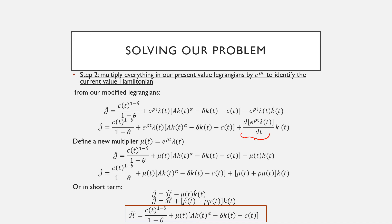Now we get the following two cases where we have something familiar from before, or we have this other option. The reason why we have that is just from thinking about what the derivative of this term is. And we know that we can simplify these Lagrangians down to a process where we have one part being our Hamiltonian and this other part being the multiplier. So H-hat here is just going to be our current value Hamiltonian.